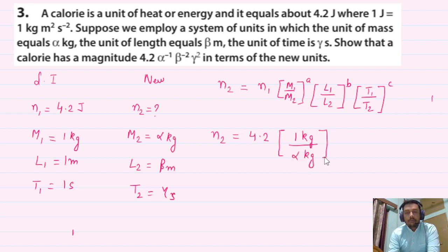The most important thing - where do a, b, and c come from? Joule is the unit of energy. Energy's dimensional formula is ML²T⁻². Compare this: m has power a, l has power b, and t has power c. So a = 1, b = 2, and c = -2.